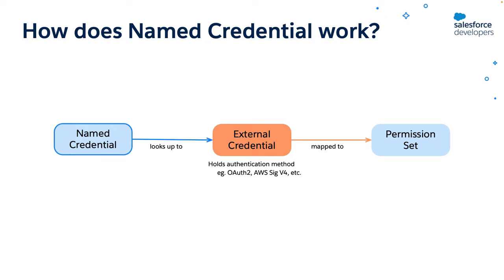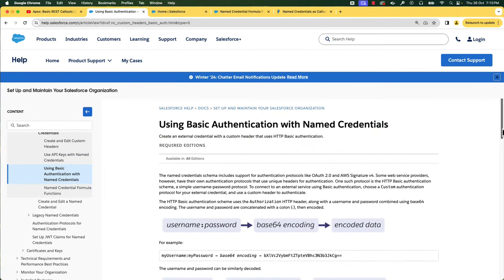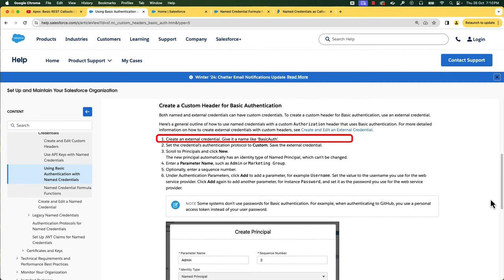These permissions are verified for authorization while making the callouts. You can then associate this external credential with a named credential. The named credential specifies a callout endpoint and an HTTP transport protocol. Whenever we do a callout using the named credential, it looks up the external credentials for authentication and permission sets or profiles for authorization. We are now ready to set up basic authentication with named credentials. You can refer to this help documentation to see the steps. The first step is to create the external credential — let's do it.